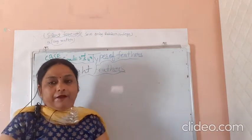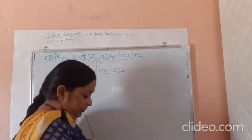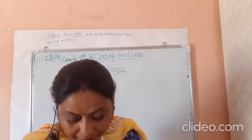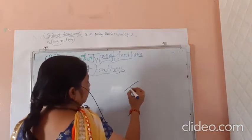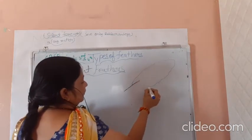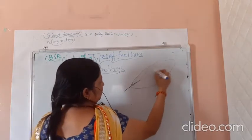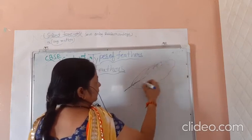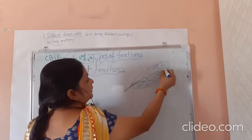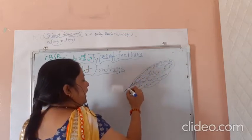Here we will only discuss about flight feathers. So firstly, let's draw the flight feather here. You can see on your screen — this is a flight feather. Here is the flight feather diagram. Flight feathers remain attached to the tail and have a long flat structure.